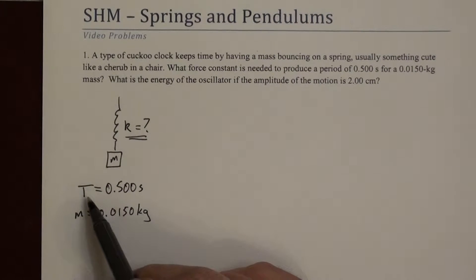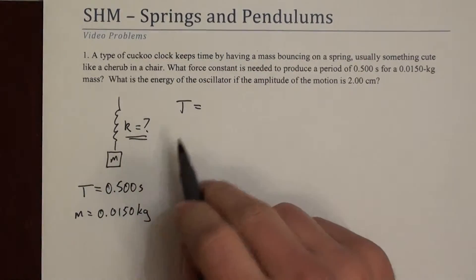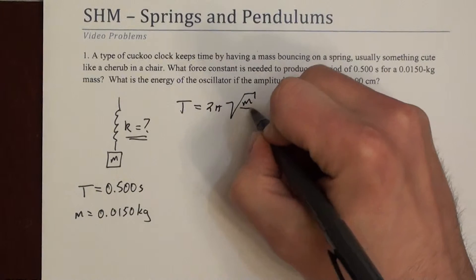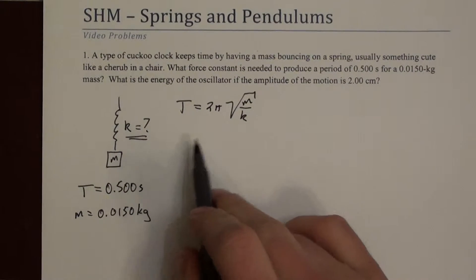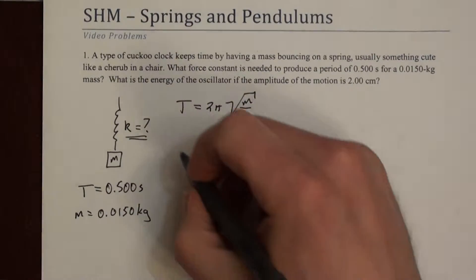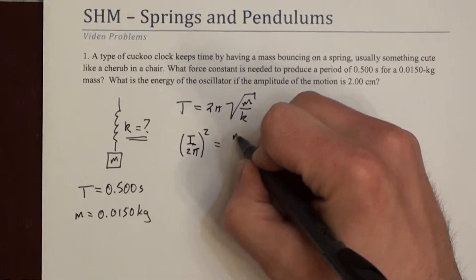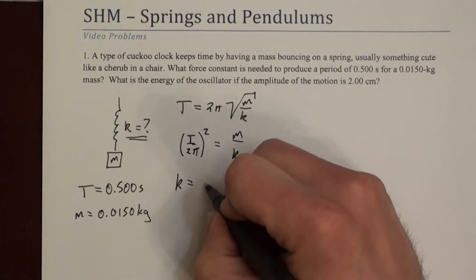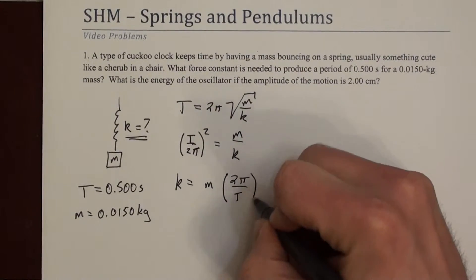We need to relate period to mass and spring constant. The equation that does that is T = 2π√(m/k). Let's do a little algebra and solve for k. Dividing by 2π and squaring both sides gives (T/2π)² = m/k. Then solving for k: k = m × (2π/T)².